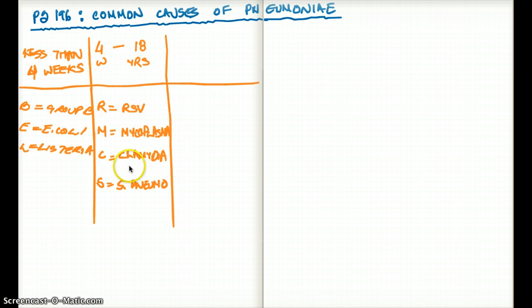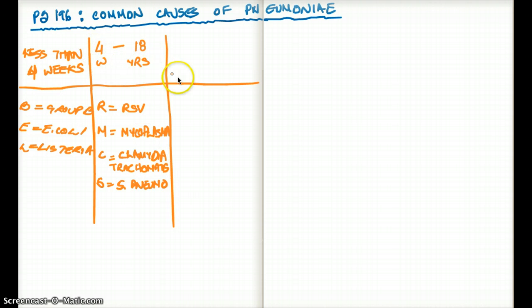Keep in mind that this Chlamydia is Chlamydia trachomatis, because this is going to change later on. This mnemonic covers from 4 weeks to 18 years.